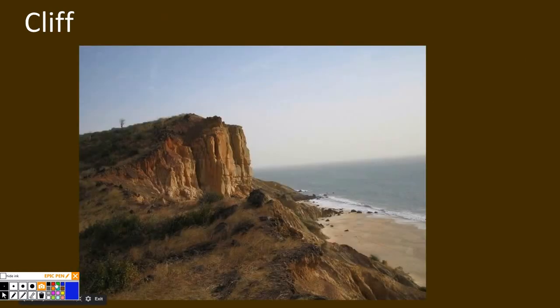A cliff is an area of rock that has been weathered by waves, and the rocks are eroded by waves out to sea where they form sediment. This is water weathering and erosion.